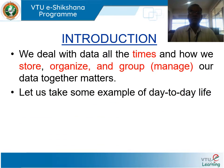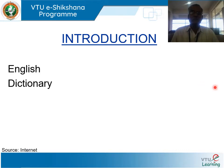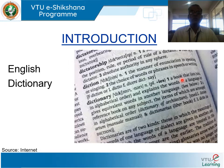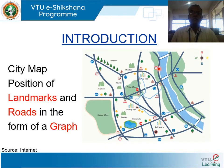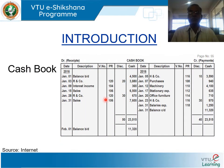Let us take some examples from day-to-day life. In the English dictionary, the words are organized in alphabetical order, which makes searching easy. For a city map, landmarks and roads are represented in the form of a graph data structure. A cash book is another example where accounts are maintained in rows and columns.